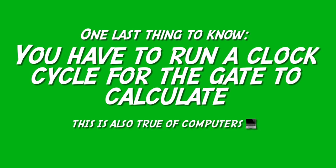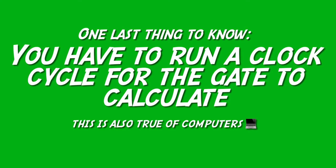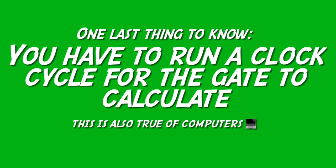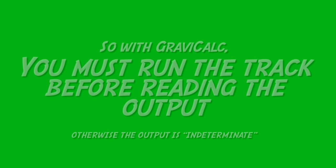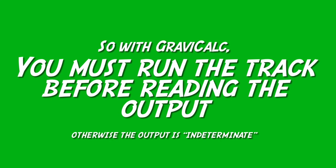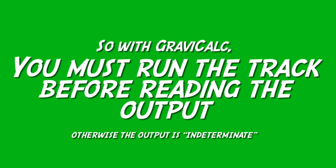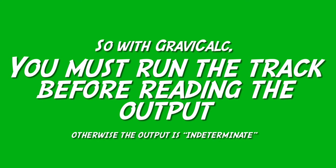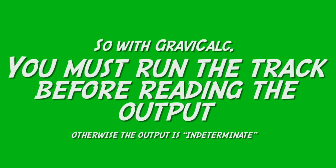One last thing you need to know: you have to run a clock cycle for this NOT gate to actually do its calculation. With GraviCalc, you've got to run the track before reading the output. The output is meaningless before you do this — it's called indeterminate.